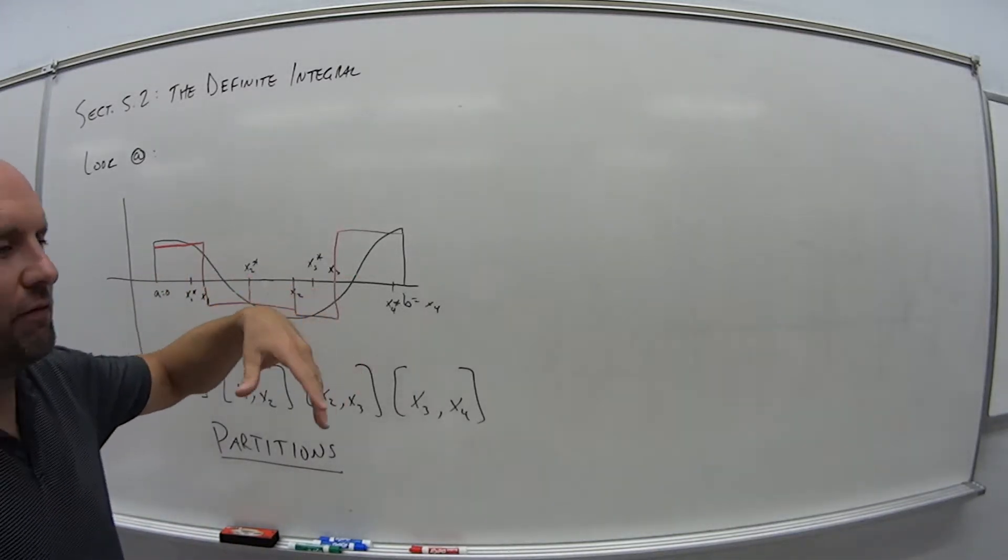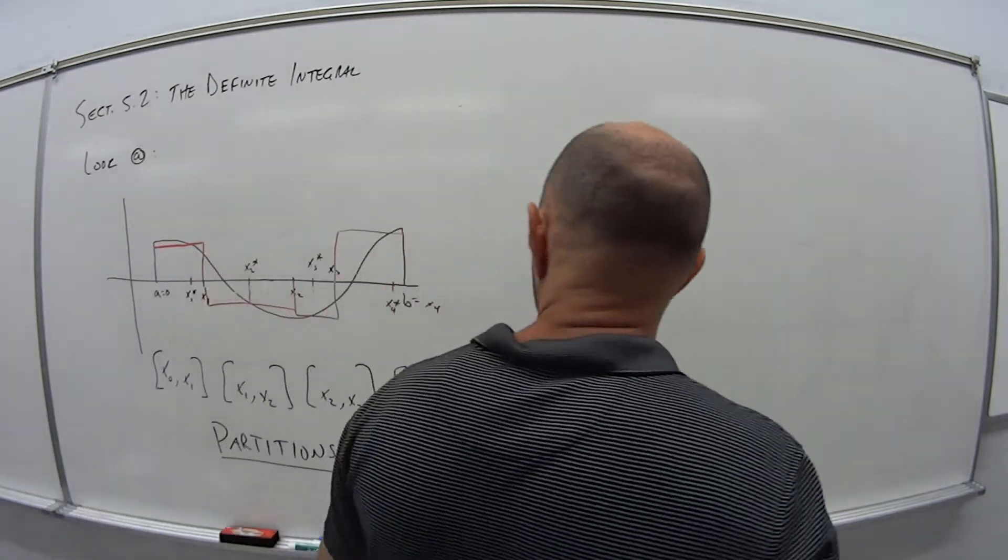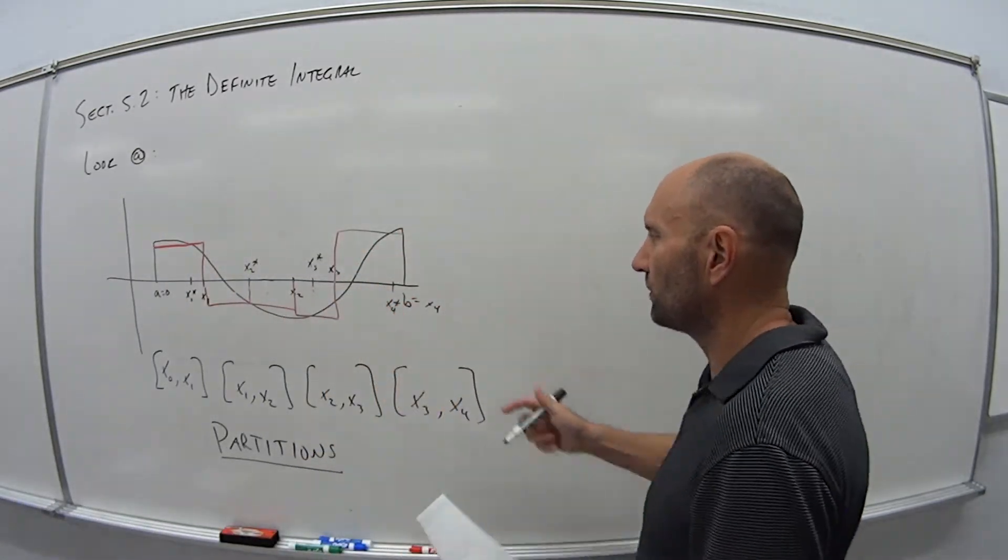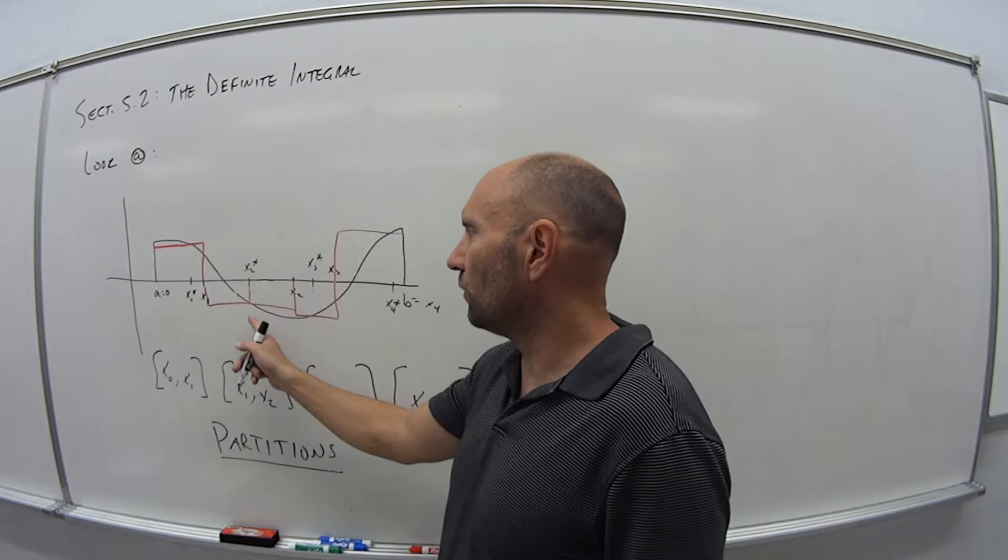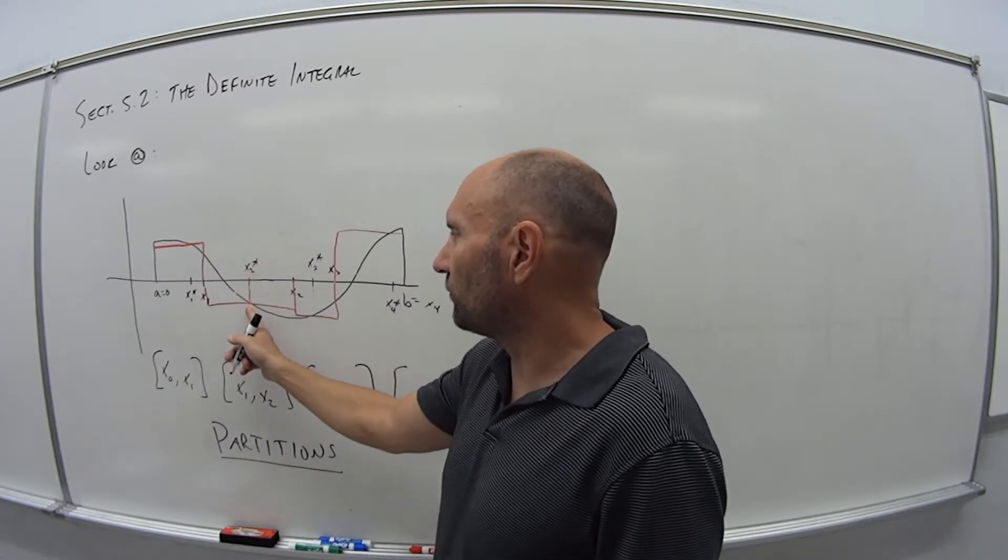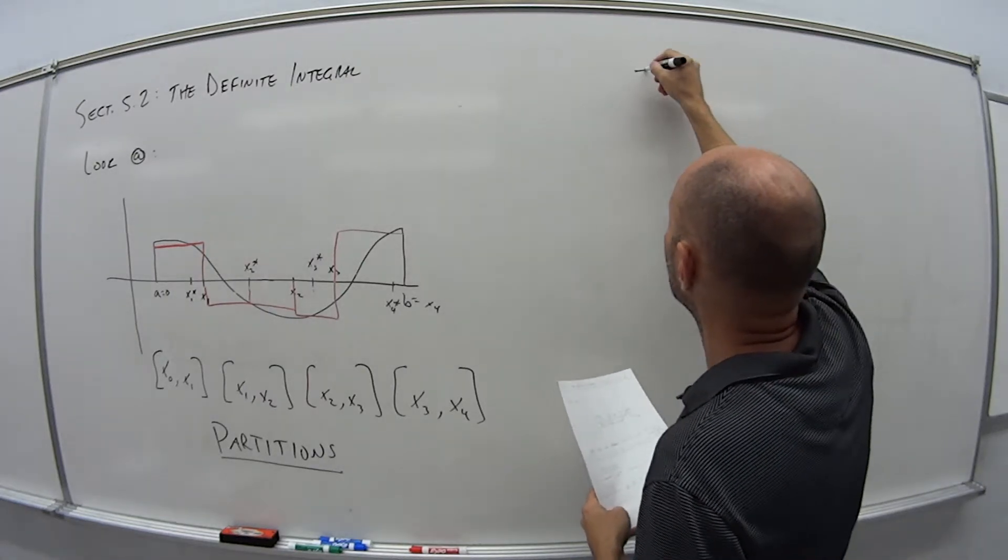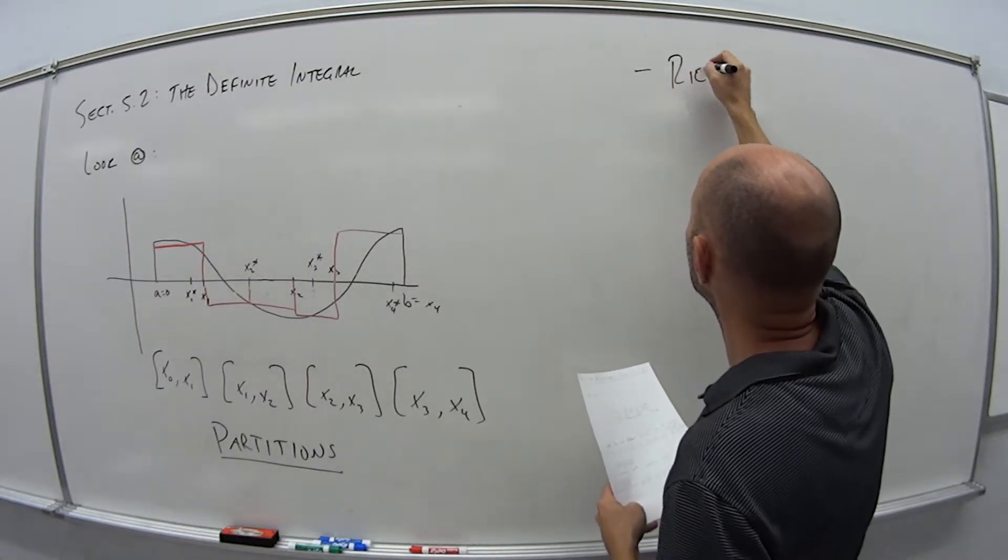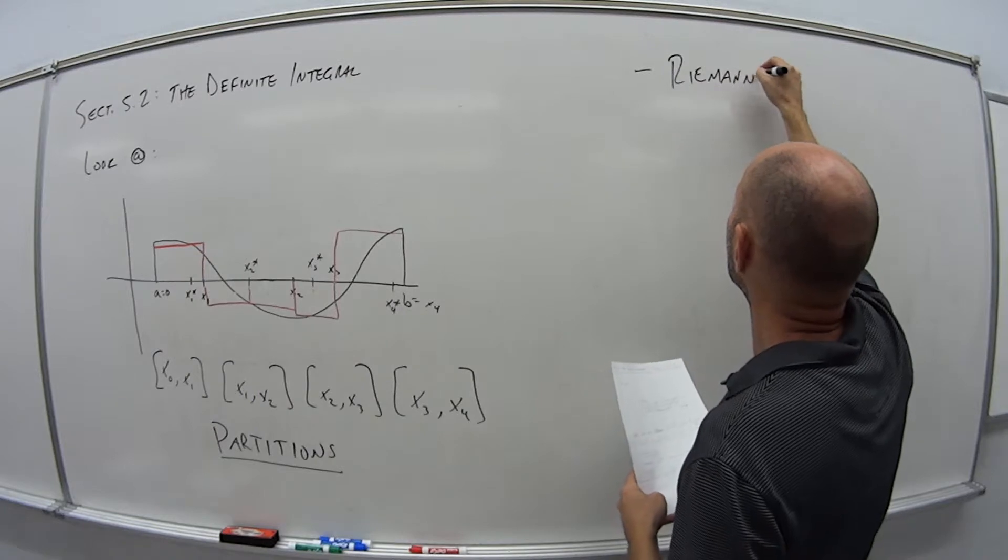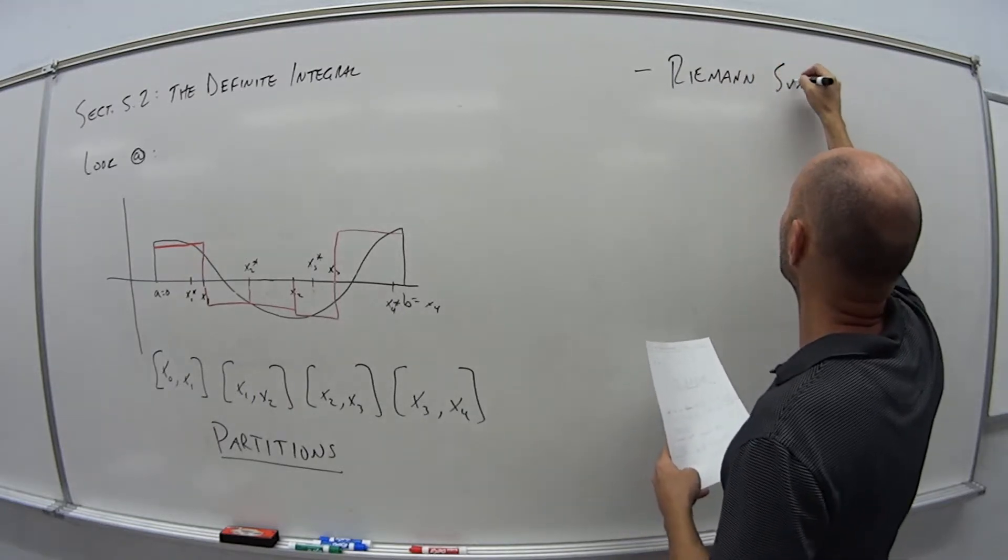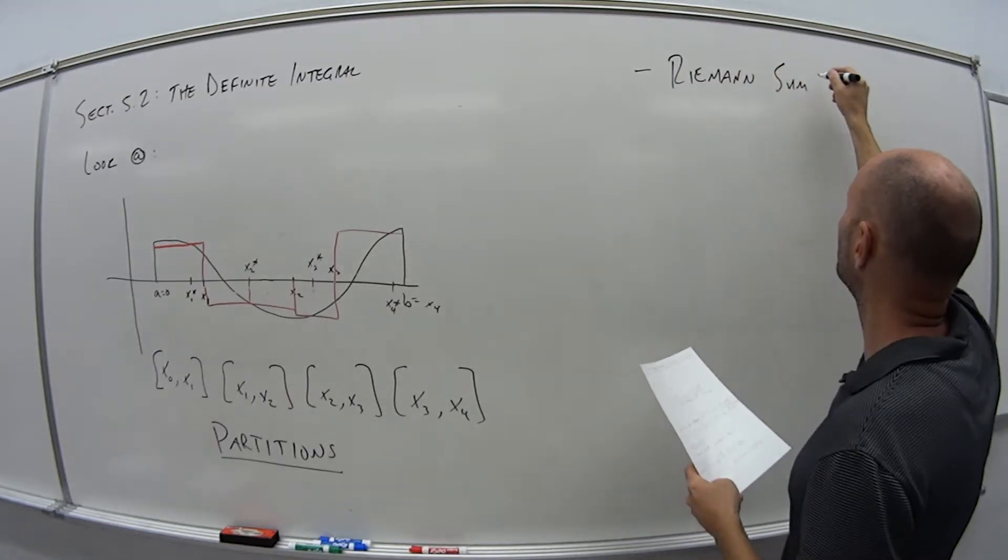So this idea of partitioning of these intervals, picking some random sample point within the intervals, figuring out the curve value at that interval and multiplying it by the width, this was developed by a mathematician last name Riemann. And he created what is known as the Riemann sum, which says the following.